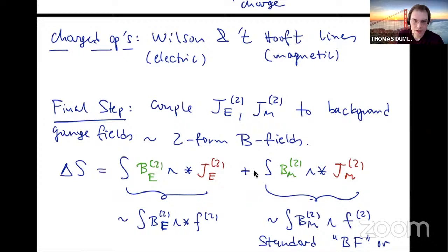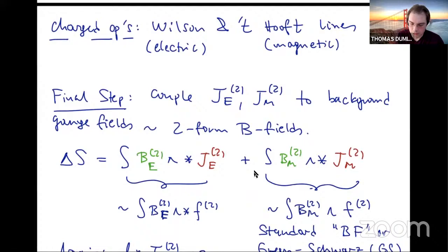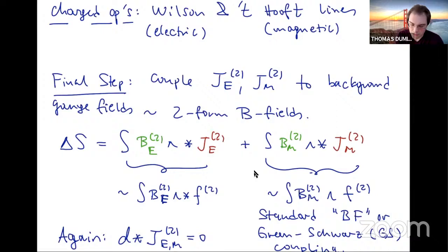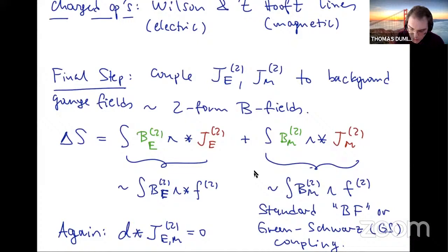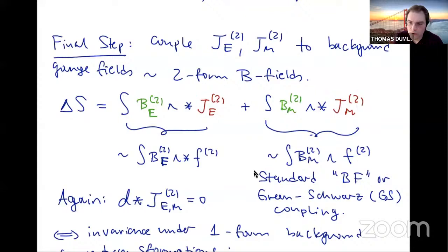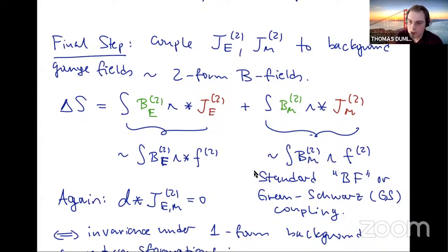The last step, in analogy with the zero-form case, is to couple these two-form currents to background fields — higher-form gauge fields. Because J_E and J_M are two-forms, the background fields will also be two-forms: B-fields, like in string theory. The coupling of J_electric to its B-field looks like that, and the coupling of J_magnetic to its B-field looks like that. In particular, if you express J_magnetic in terms of the Maxwell field, you get a coupling that looks like B_magnetic wedge the Maxwell field strength — a standard BF-type interaction or Green-Schwarz coupling involving the non-dynamical B-field and the dynamical U(1) Maxwell field.